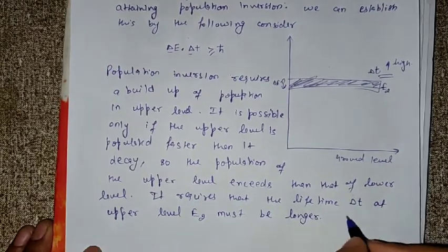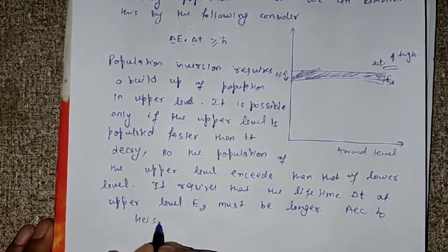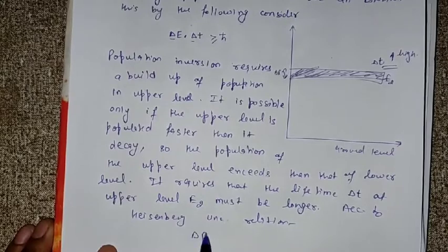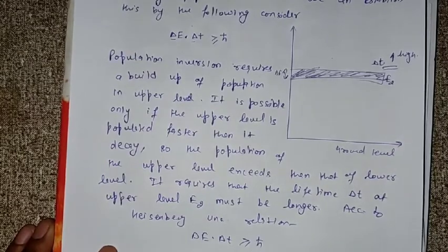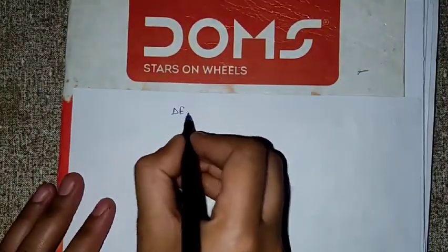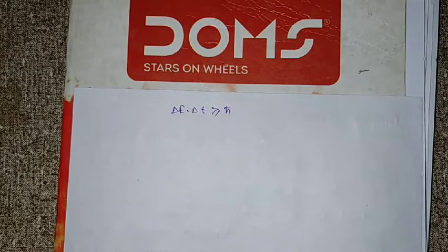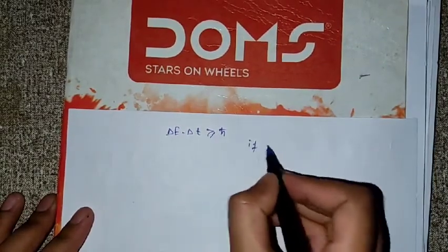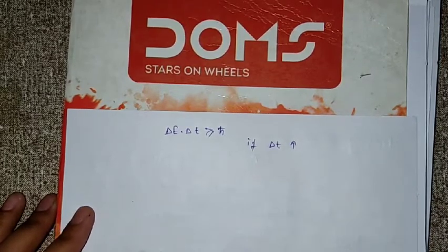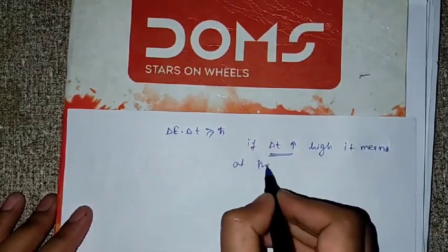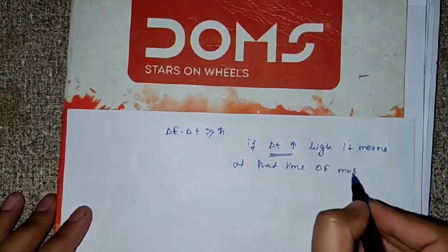According to the Heisenberg Uncertainty Relation: if delta T is high, then delta E must be low. This means either delta T is high or delta E is low — they cannot both be simultaneously high. If delta T is high, delta E is low, meaning the energy level must be narrow.